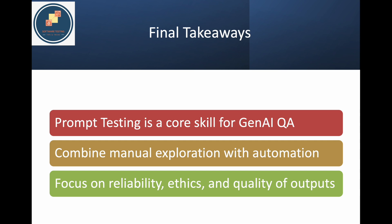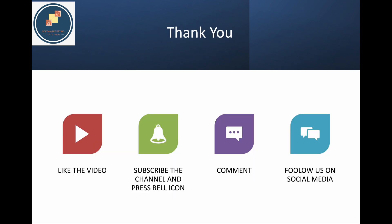Focus on the reliability, ethics, and quality of outputs. Whenever you get an output, first check: is it ethical? Is it reliable? Is it quality — user friendly, giving correct data, giving enough data, and not biased? These are the things you need to take care of. Thank you guys — like this video, subscribe to the channel, press the bell icon, share it with your QA friends, feel free to comment with any ideas or your own testing experience, and follow us on social media.